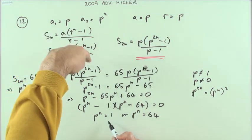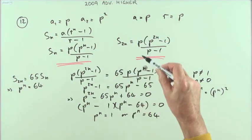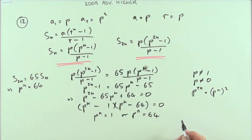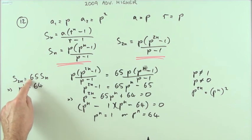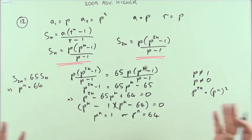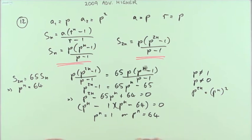But p cannot be 1, and neither could it be -1 because then you'd have an oscillating sequence of -1, 1, -1, 1, in which case the sum to n terms would either be 0 or -1, certainly wouldn't come to 65 times any previous one. So p^n must equal 64.